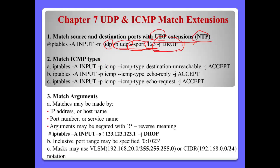Number 2: Match ICMP. ICMP has a lot of messages. We can define like this: protocol ICMP and ICMP type — for example, destination unreachable — then we will accept this kind of ICMP type. Also echo reply and echo request will be accepted. When configuring ICMP, you have to consider these kinds of ICMP messages.